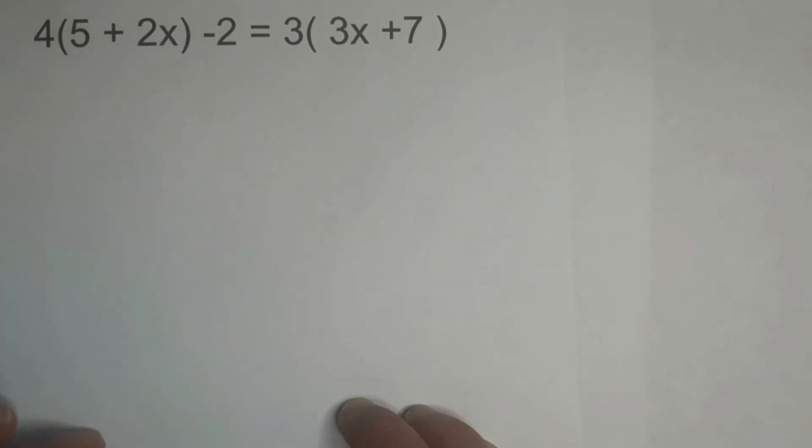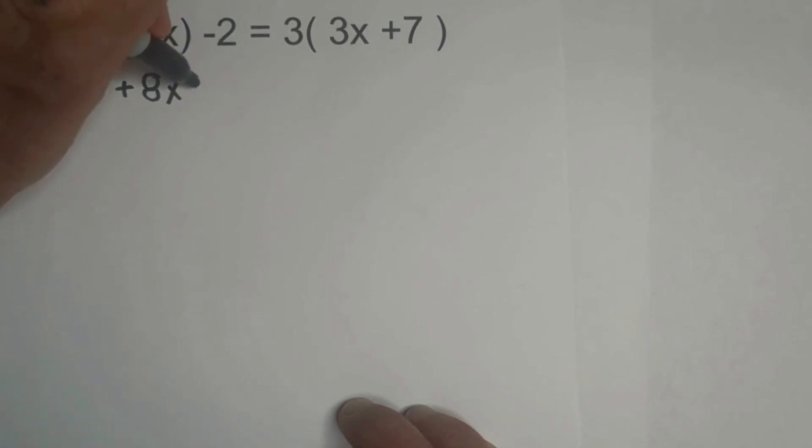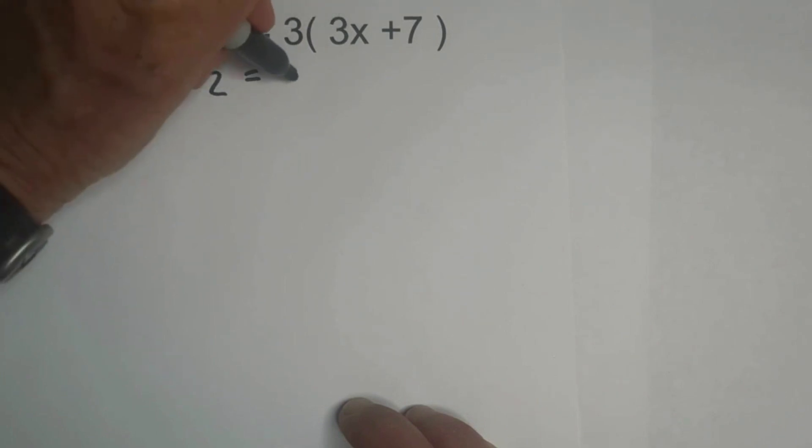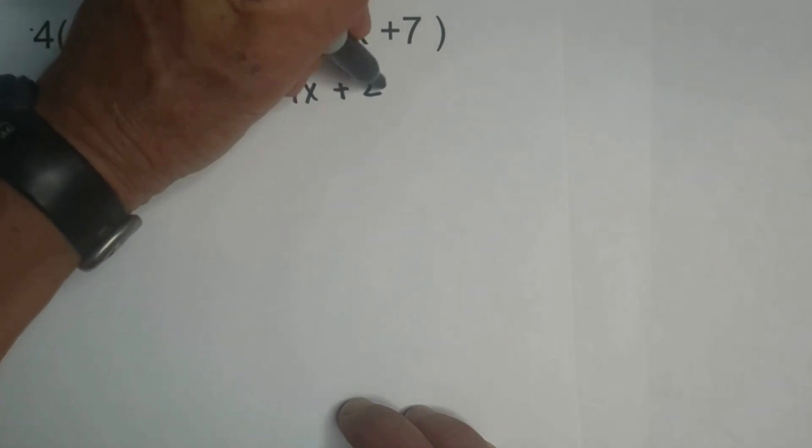We have parentheses with this example, so we'll distribute. 4 times 5 is 20, plus 4 times 2x is 8x. Remember the negative 2. On the right side, 3 times 3x is 9x, plus 3 times 7 is 21.